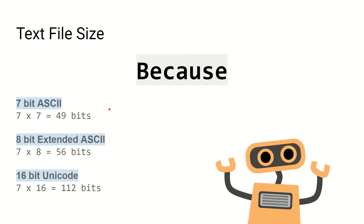Before we look at the method for compressing text using the Huffman encoding method, we first need to remind ourselves how we can work out the file size of a piece of text. This will be different depending on whether you use extended ASCII, 7-bit ASCII, or 16-bit Unicode. If we're using 7-bit ASCII we work out the frequency of all the characters inside the text and then multiply by the number of bits used to represent each character. So with 7-bit ASCII, seven characters times seven bits gives us 49 bits.